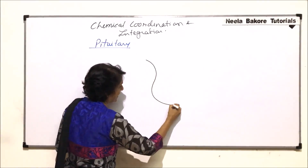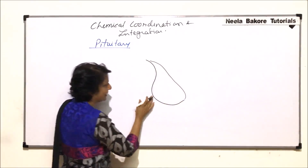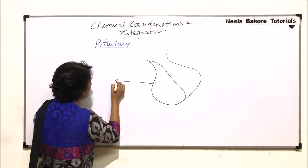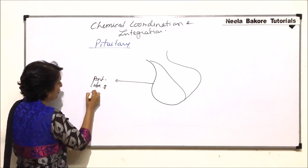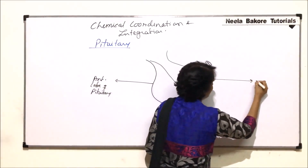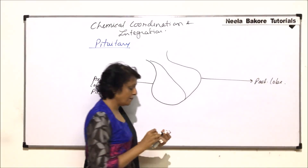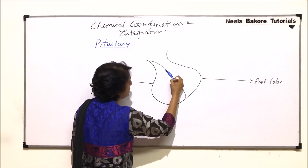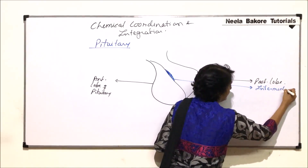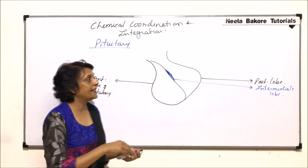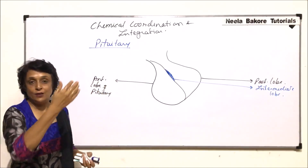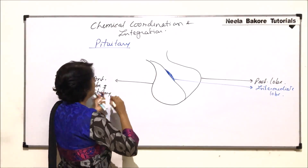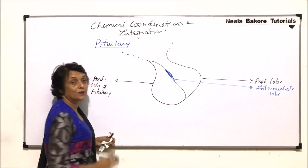We will draw the pituitary in a simple manner to understand all the parts. This part shown here is the anterior lobe of the pituitary, and this is the posterior lobe. In between these two lobes there is the intermediate lobe. The pituitary is attached from the lower side of the brain to the hypothalamus, so from the hypothalamus there is an extension to which the pituitary is attached.